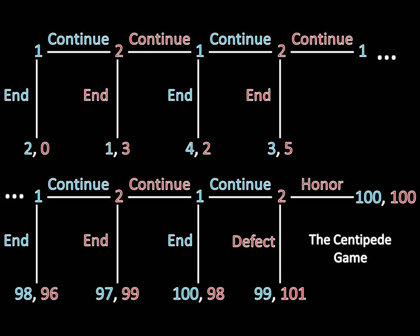If we move on another step, then player 1 continues or ends. If he ends, then he gets 4 and she gets 2, and so forth. We're going to do this process 100 times over, hence the name Centipede game — it's got 100 legs. Until finally, player 2 makes a move at the very end of the game where she has to honor or defect. If she honors, then both players get 100. If she defects, then she gets 101 and he gets 99.